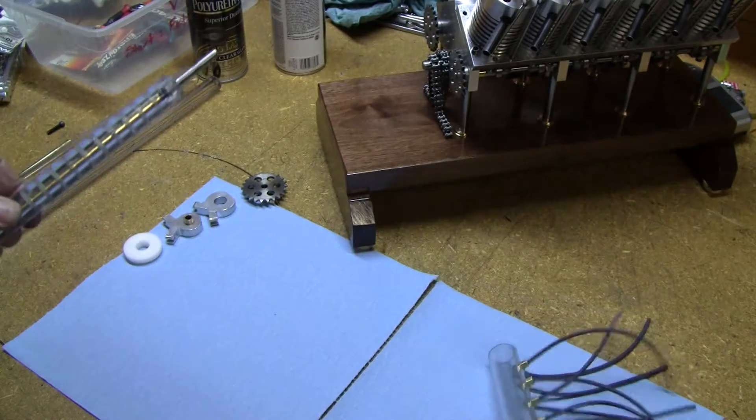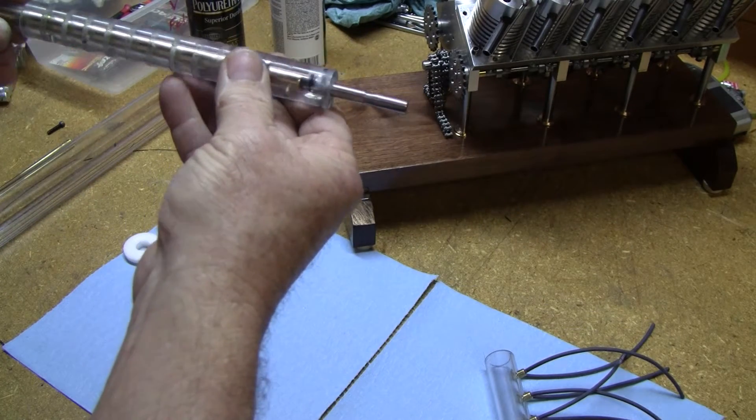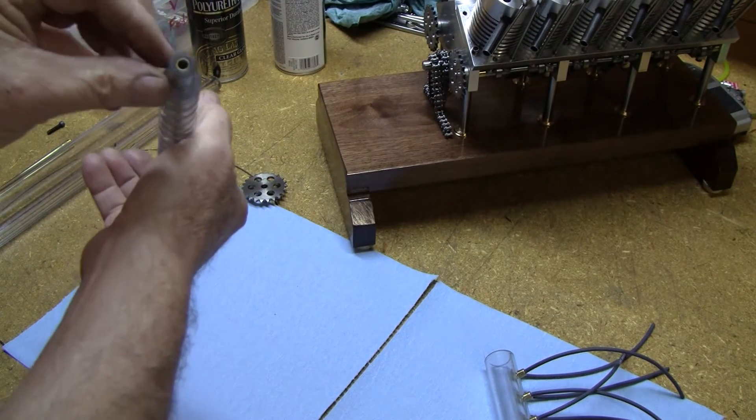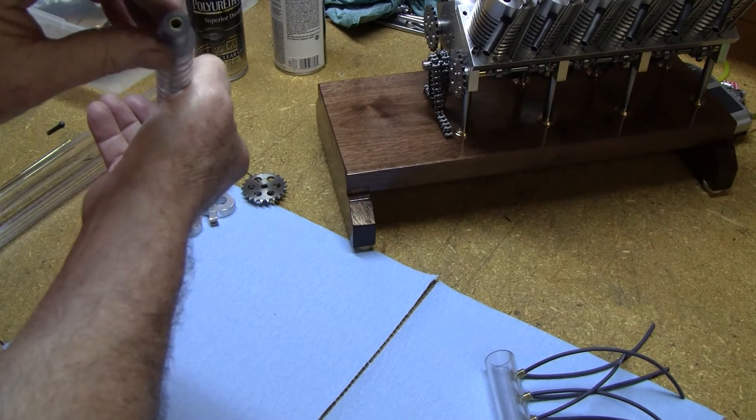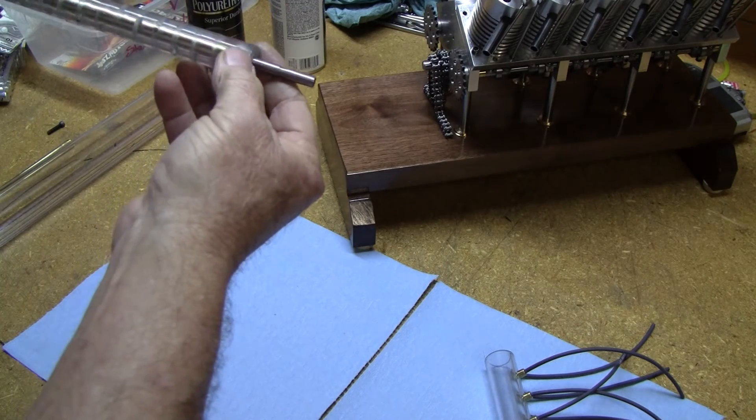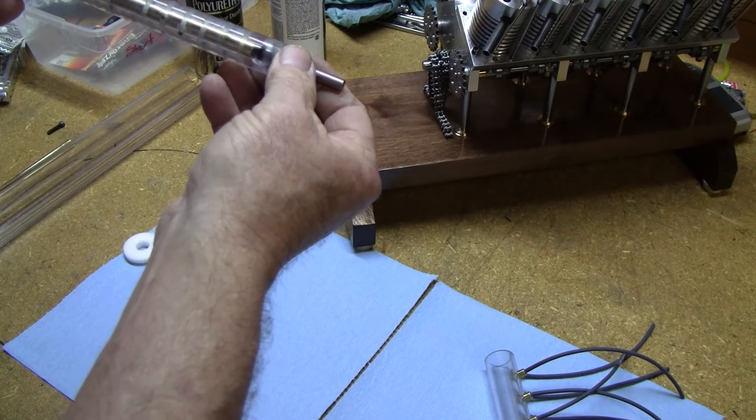And then the center part, the part that rotates, I put a brass piece of brass tubing down through the center, all the way down through. That's the main conductor for the coil.